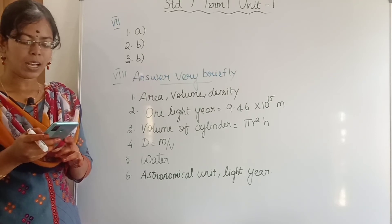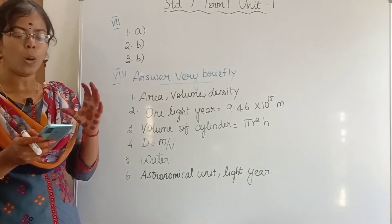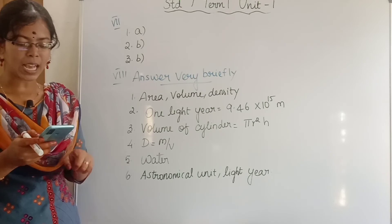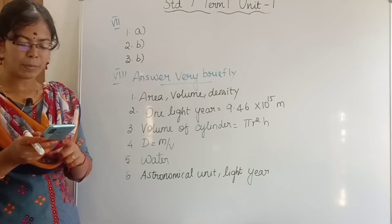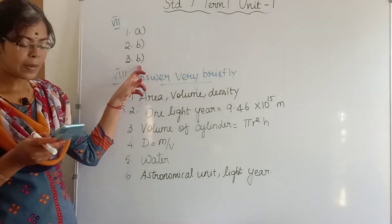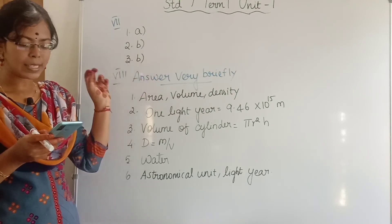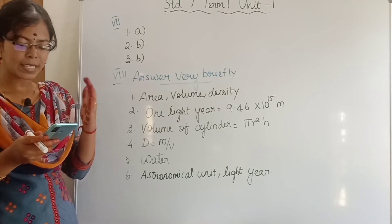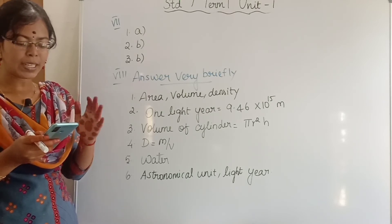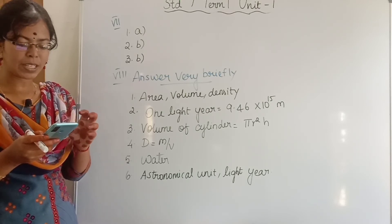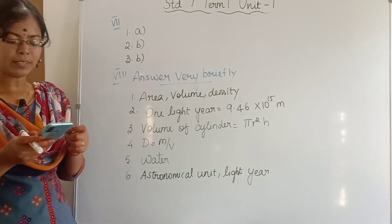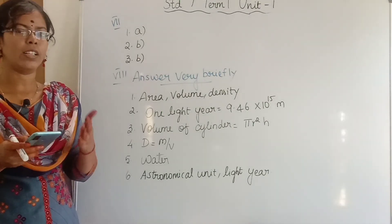Third assertion-reason question: assertion — an iron ball sinks in water. Reason — water is denser than iron. Both assertion and reason are true, but the reason is not the correct explanation of the assertion. The correct reason should be: the density of iron is more than water. Option B.